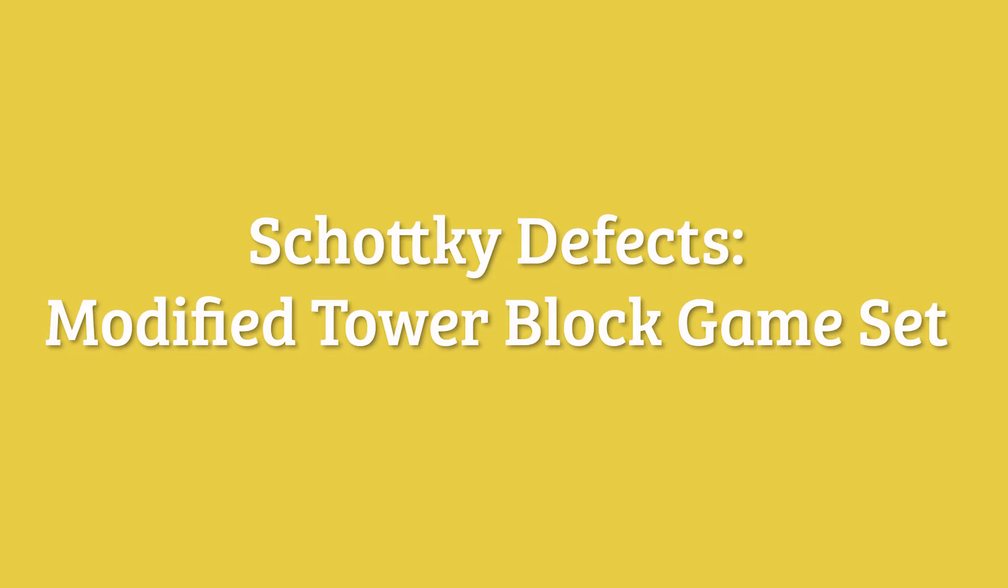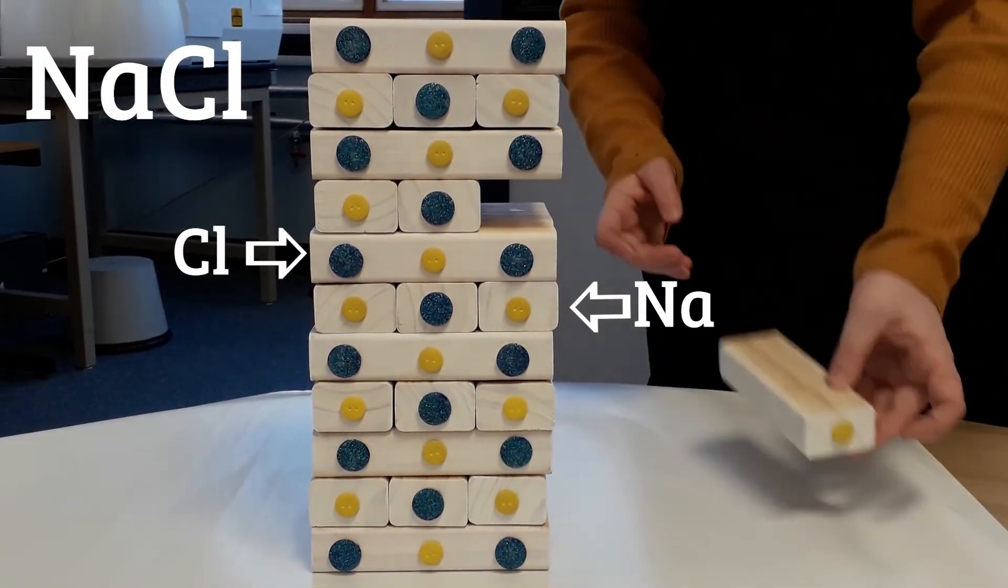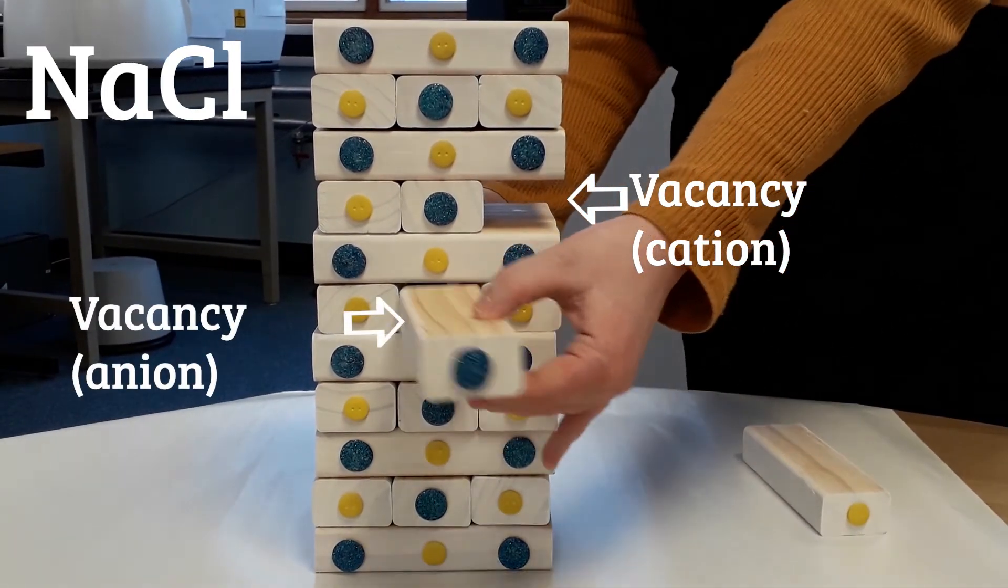Using our tower block set to visualize the Schottky defect, observe how a pair of vacancies are formed through the removal of the yellow button block and the blue button block. This is an example of sodium chloride.